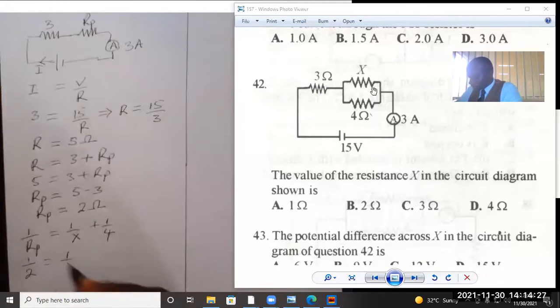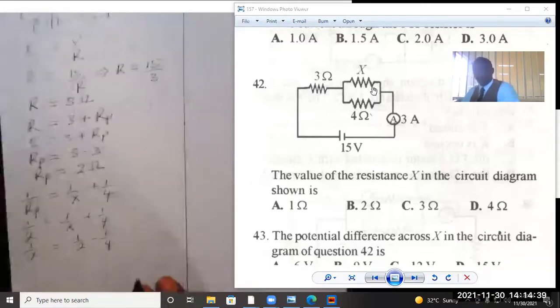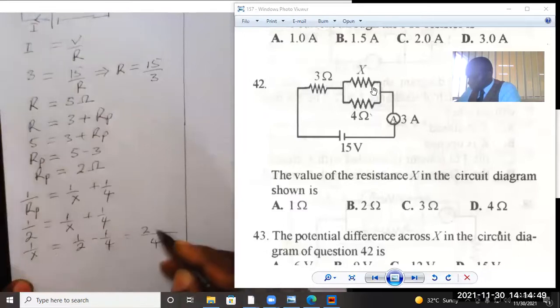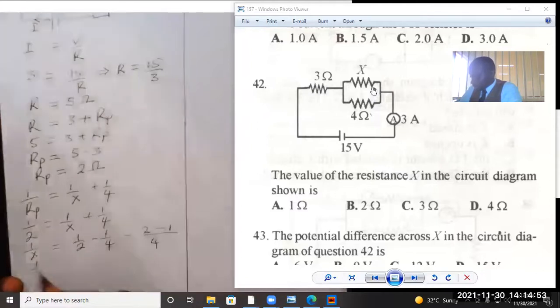X you don't know. So you make 1 over X the subject of the formula. That will be 1 over 2 minus 1 over 4. The LCM is 4. 2 goes into 4 twice, and you have 2 minus 1. So you express that 1 over X is equal to 1 over 4.